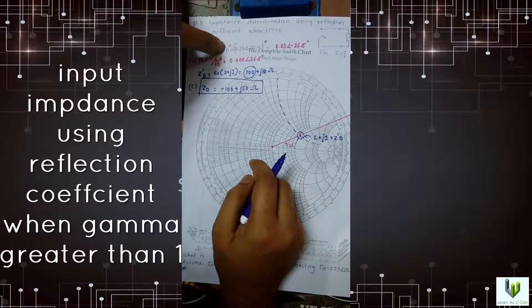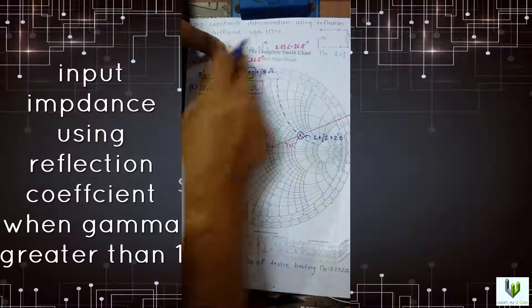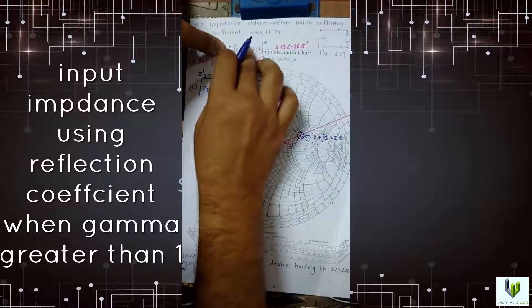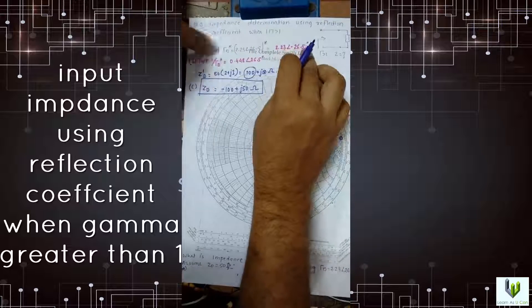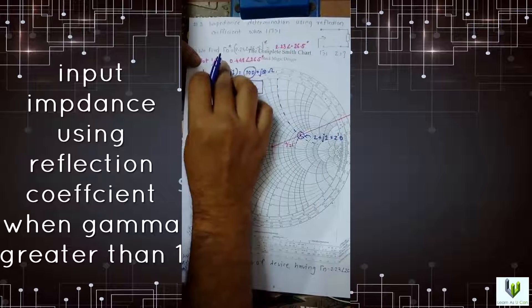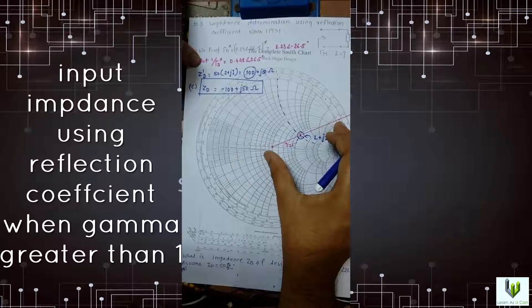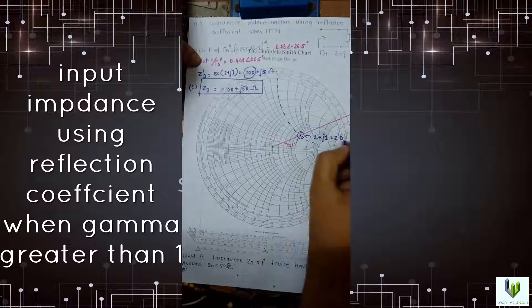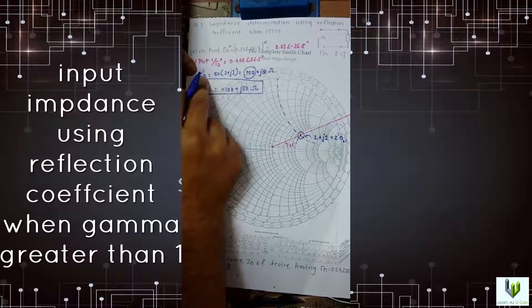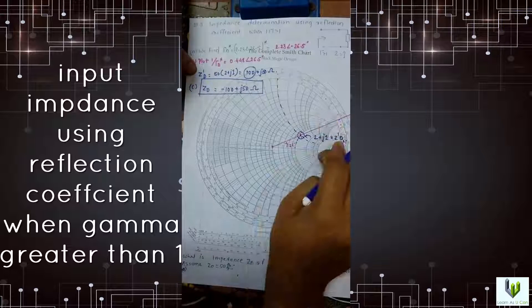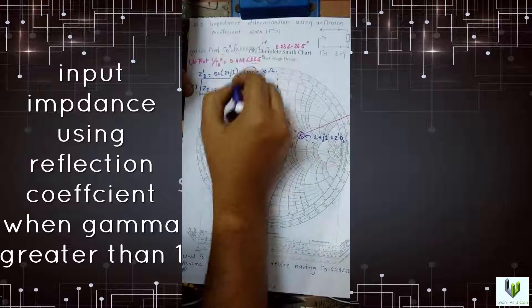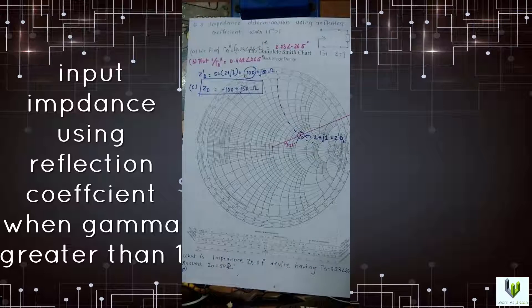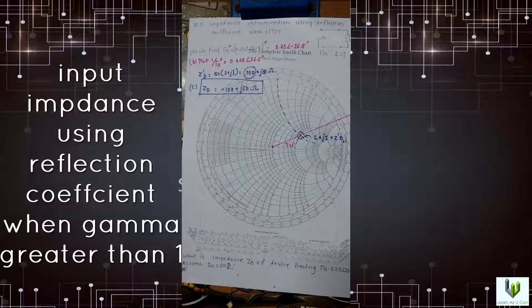What we have done? Just conjugate the first term because it is greater than gamma, so we can't plot it directly on Smith chart. Just change this sign to minus 26.5. Plot this 1 by gamma D conjugate onto the Smith chart. Get this Z dash T normalized value, and after that multiply by 50 to get the real value, and just change the sign from positive to negative. You got the result of the ZD of the device.